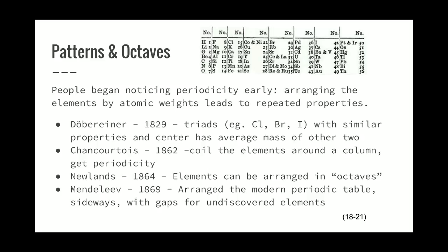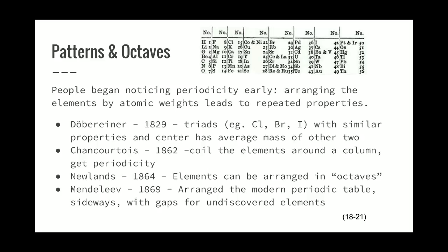The patterns in the periodic table have been noticed for a while. Back in 1829, Dobereiner, a German, noticed triads - a trio of three elements that have similar properties, where the central atom has the average mass of the other two. For example, chlorine, bromine, and iodine, three halogens.